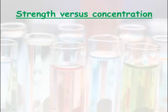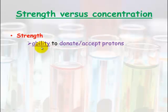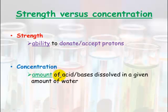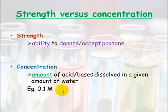Strength versus concentration — these are the two terms that are mixed up all the time with acids and bases. Strength is the ability to donate or accept protons — how readily a particular acid or base will accept or donate protons. Concentration is the amount of acid or base dissolved in a given amount of water, generally with a unit such as 0.1 molar. It's the number of particles per amount of water; strength is the ability of those particles to donate or accept protons.